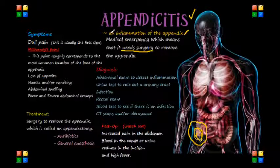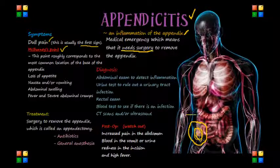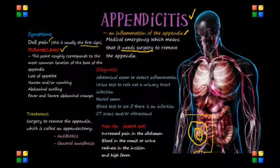Let's look at the symptoms of appendicitis. Dull pain near the navel or upper abdomen that becomes sharp as it moves to the lower right of the abdomen is usually the first sign. For the NCLEX exam, try to remember what we call McBurney's point, which is basically the name given to the point over the right side of the abdomen that is one-third of the distance from the anterior superior iliac spine to the umbilicus, or the navel area of the body. This point roughly corresponds to the common location at the base of the appendix, where it connects with the cecum.